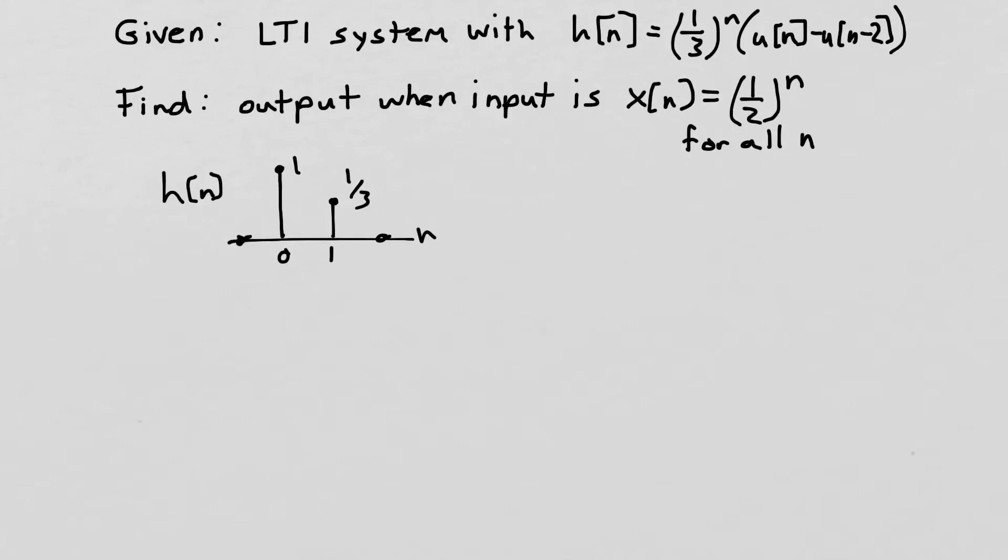And again that's because this term here is only non-zero at 0 and 1. At 2 it goes to 0 because at 2 we have u of 2, which is 1, minus u of 2 minus 2, which is also 1, so that goes to 0. So this is our impulse response.